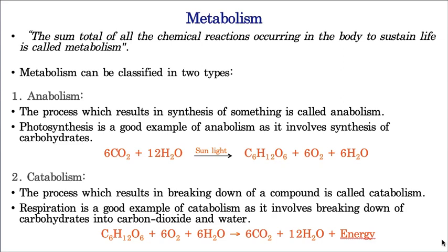For example, let us say a person named Ram — his body may have many hundreds of chemical reactions taking place. The sum total of all these chemical reactions that take place in the body to maintain life is called metabolism. Metabolism is of two types: the first one is anabolism, and the second one is catabolism.